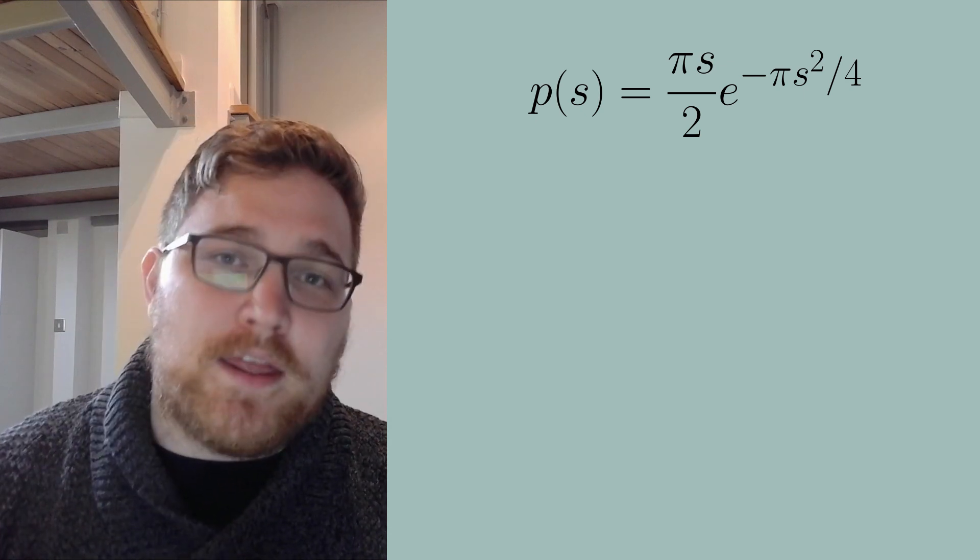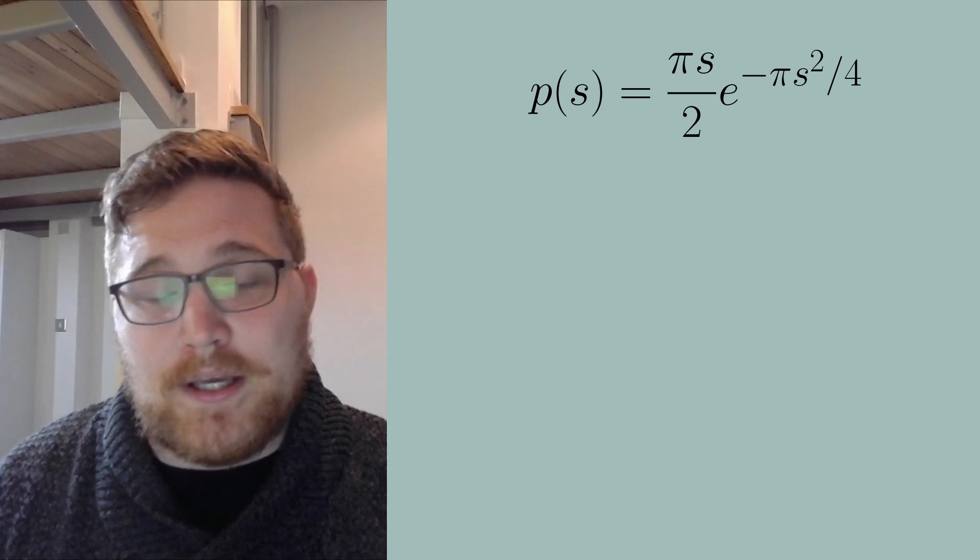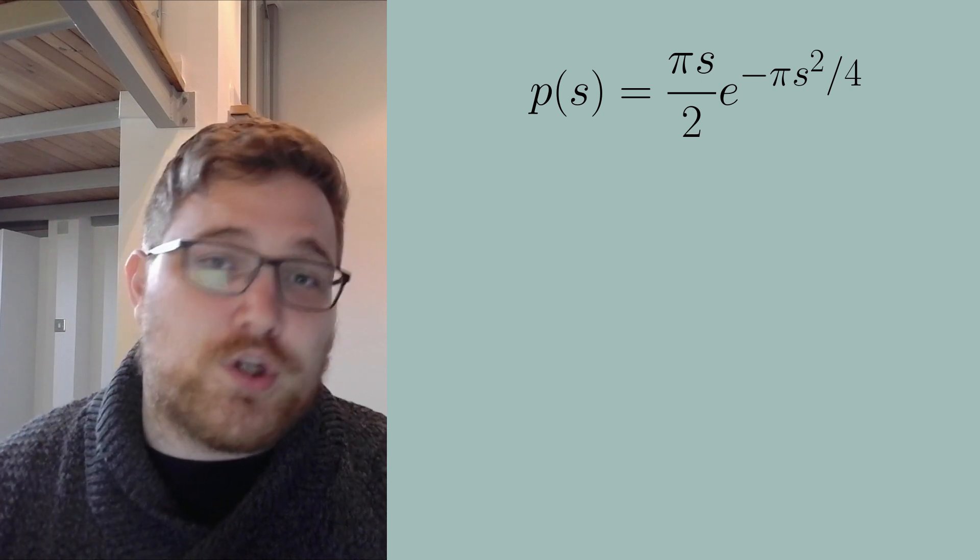So the first equation is a huge ingredient for the field of quantum chaos. The equation is called the Wigner-Surmise, and the most simple form of it takes the following form. Right away, the notation might seem natural to you. You probably think it is a probability distribution and you would be right.